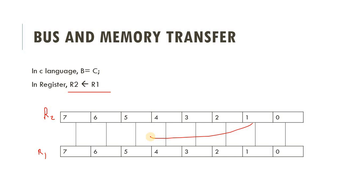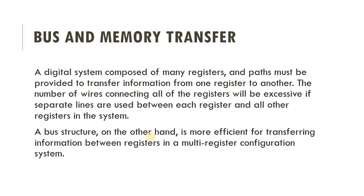This is easy for an 8-bit register, but suppose we have 64-bit or 128-bit registers. That would require many connections. In a computer system there are many registers, and register 1 is not only connected to register 2 but also to other registers. Suppose there are 99 registers — register 1 needs to connect to the remaining 98 registers, requiring a very large amount of cables. This system becomes very complex and expensive.